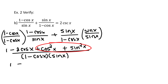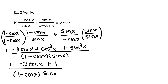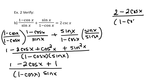Now it doesn't look any simpler, but step back and notice cosine squared x plus sine squared x is a Pythagorean identity equal to 1. So we replace them: we have 1 minus 2 cosine x plus 1, all over (1 minus cosine x) times sine x. Adding the two constants together gives us 2 minus 2 cosine x divided by (1 minus cosine x) times sine x.